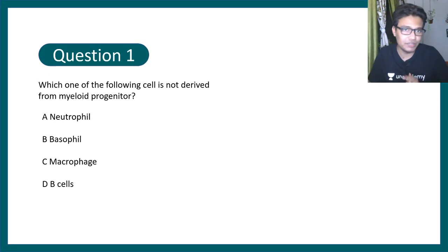We have 10 questions. First question is: which one of the following cells is not derived from myeloid progenitor? Neutrophil, basophil, macrophages, and option D is B cell.